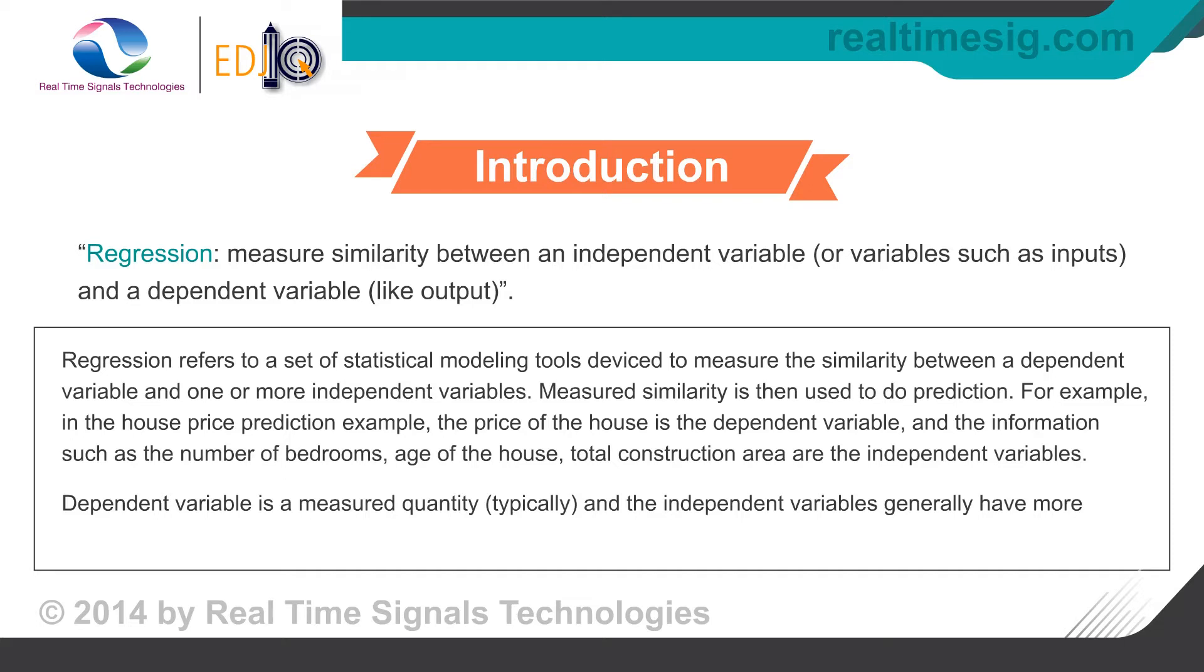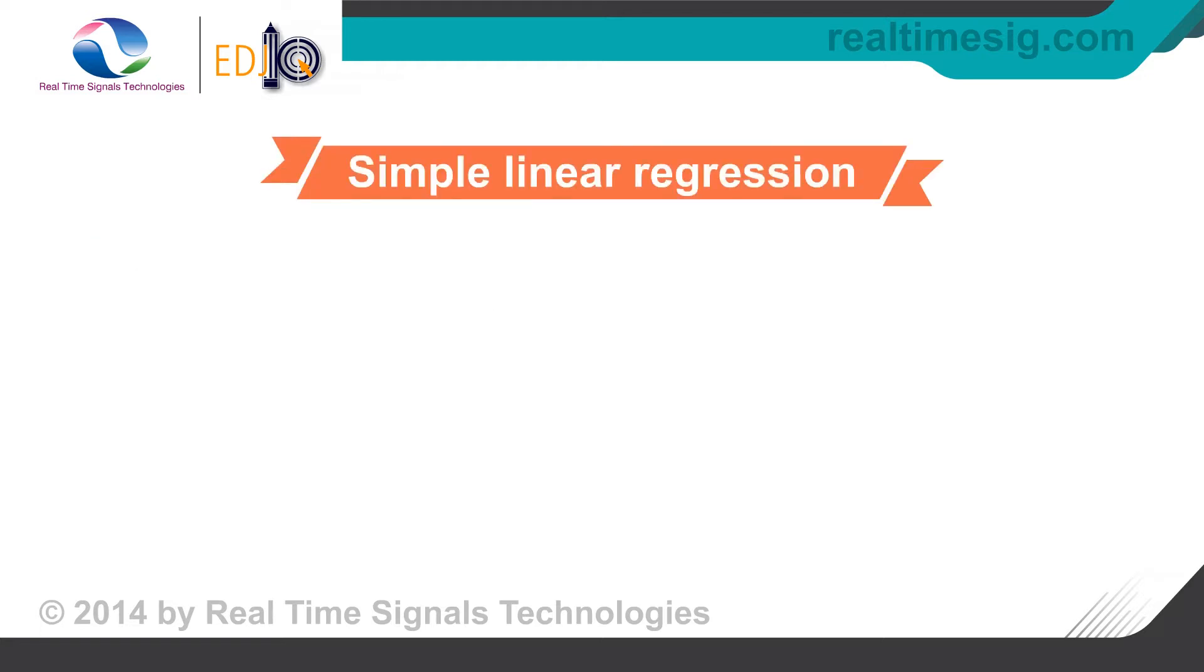Dependent variable is a measured quantity, typically, and the independent variables generally have more physical meaning. Linear regression assumes a linear dependence between the dependent and the independent variables.